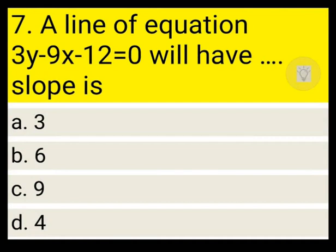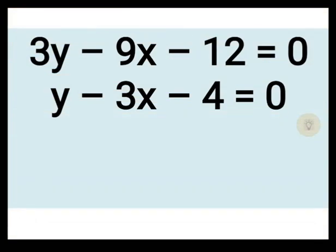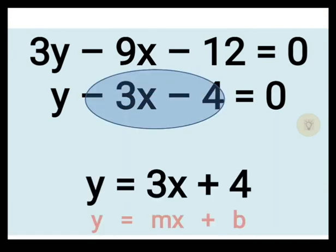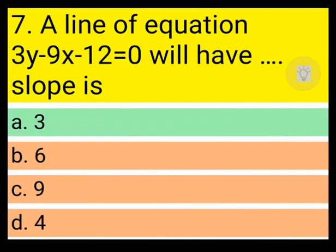Next question: a line with equation 3y - 9x - 12 = 0 will have a slope of 3, 6, 9, or 4? This is not straightforward to answer directly because the equation of a line is y = mx + c and here we have 3y. We need to divide each term by 3, giving us y - 3x - 4 = 0, which can be written as y = 3x + 4. Here m is the slope, and therefore 3 is the correct answer.